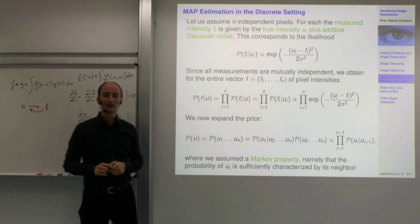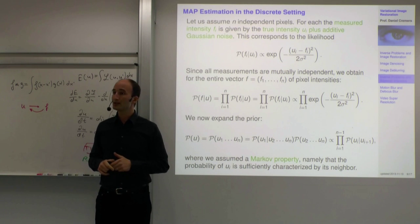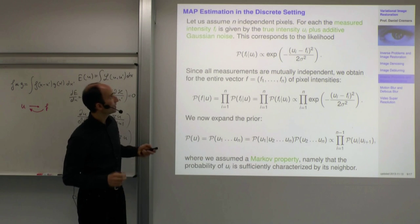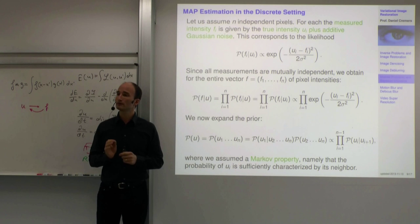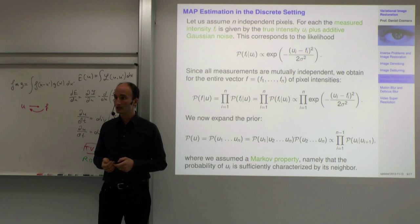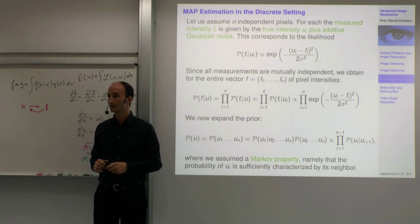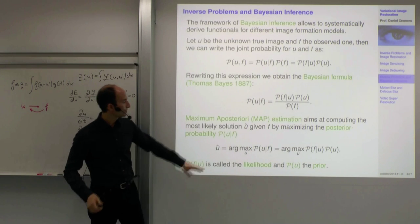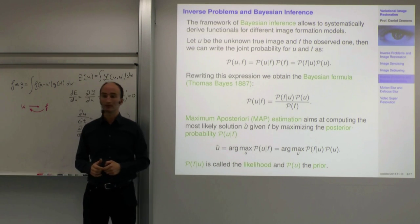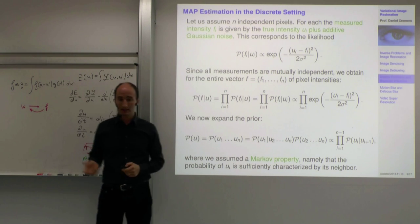Let's look at a very specific example — denoising in this statistical Bayesian inference framework. Can we really boil down the denoising all the way to a pixel level, model what's going on, and derive an appropriate cost function? We'll use a Bayesian inference approach to derive a cost function. Ultimately, what we do is compute a maximum a posteriori, and this will be a variational problem in our setting.